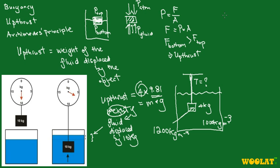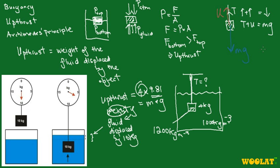Standard procedure: draw the free body diagram for the mass. At this moment you have a tension T acting upward on the mass, upthrust U also acting upward, and weight mg acting downwards. Given that this mass is stationary — in other words it's in equilibrium — the equation should be T plus U equals mg. All upward forces added together equal the downward force.